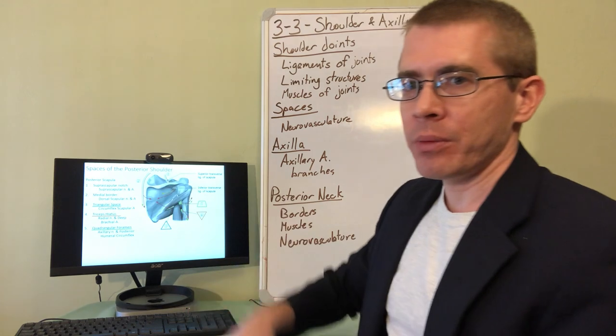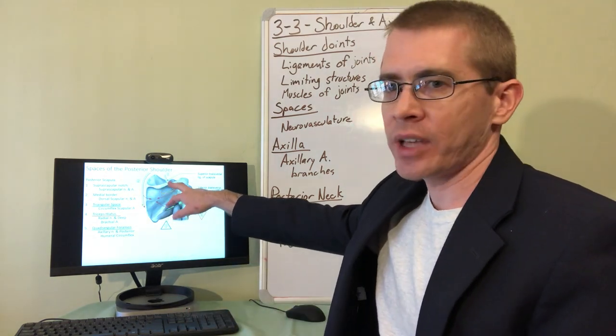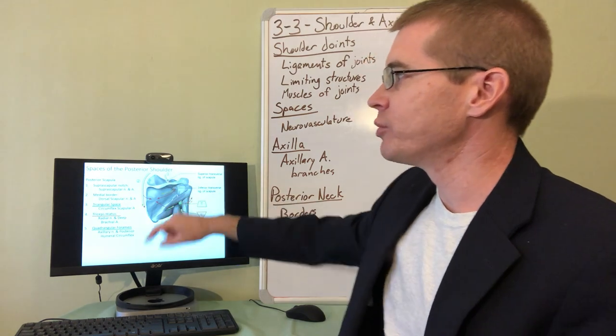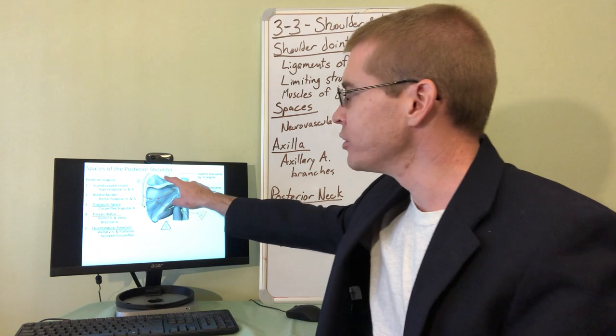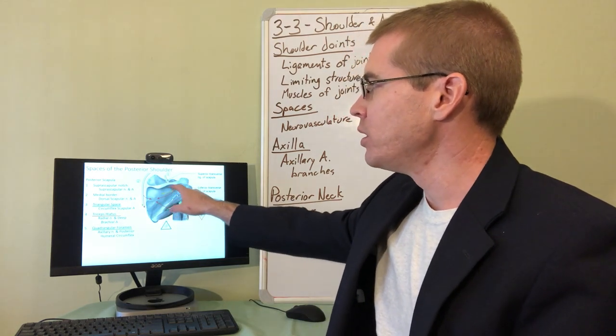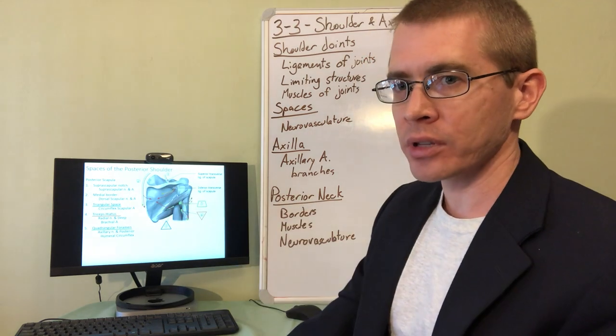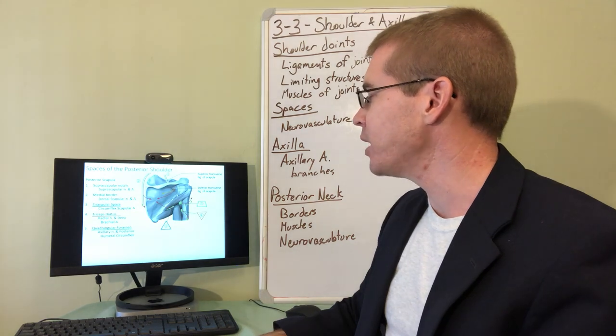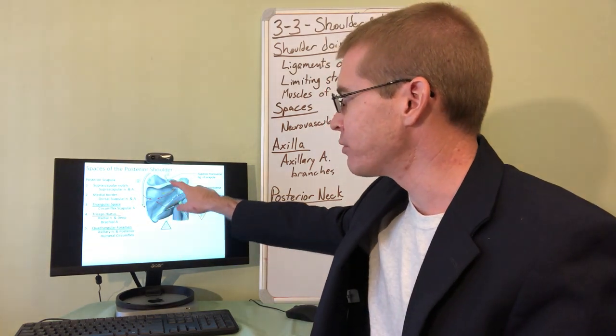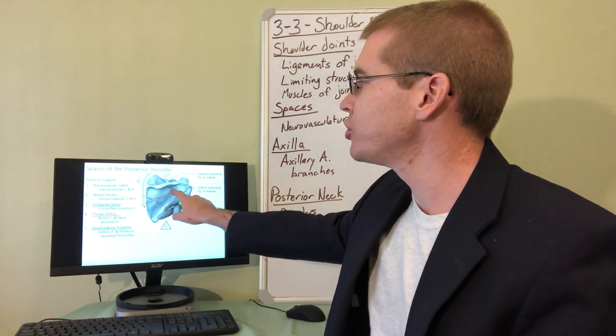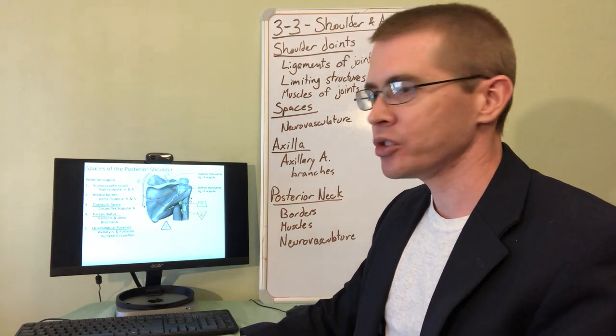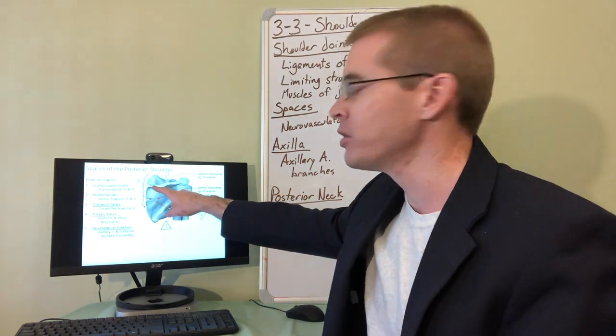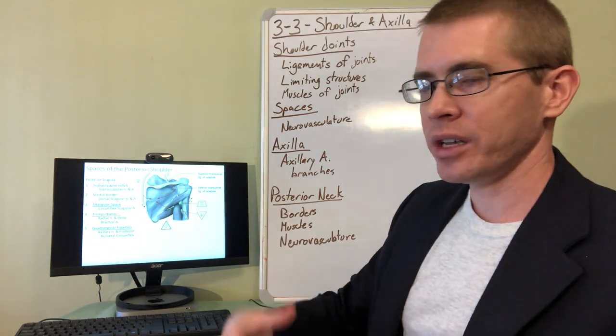So first of all, on the top of the scapula, there is a suprascapular notch, an imperfection in that scapular bone, through which the suprascapular nerve and artery travel. So the nerve actually travels below deep to a superior transverse scapular ligament, whereas the suprascapular artery travels above on top of that ligament of the suprascapular notch. And then those structures head around the spine of the scapula to supply the infraspinatus muscle. So you're seeing a pattern here, there's a supraspinatus muscle and an infraspinatus muscle and they're named based on their relation to the spine of the scapula. So again, these names tend to make sense.